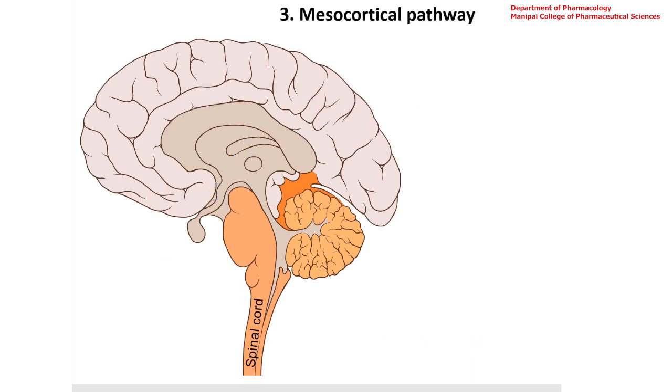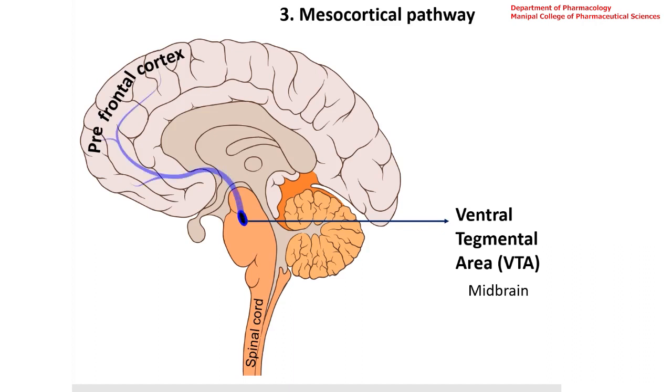The third pathway is the mesocortical pathway. This extends from ventral tegmental area in the midbrain to the parts of prefrontal cortex. Cell bodies are located in ventral tegmental area and the axons project to different regions of prefrontal cortex. This pathway has important functions in cognition, emotion, motivation, etc. Abnormalities in the pathway result in many pathologies including psychosis.